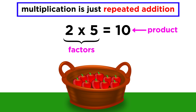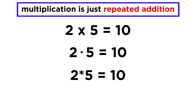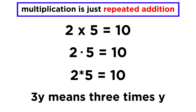Two and five are called factors, and ten is the product. Early on, we will see an X as the symbol for multiplication, but later on in our study of math we won't see this as often. Instead, we will just see a dot, an asterisk, or even nothing at all, because when two algebraic terms are adjacent, it is implied that the terms are being multiplied.